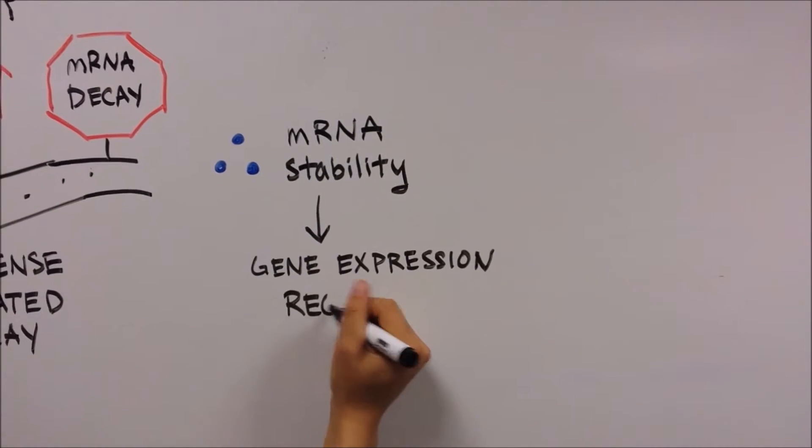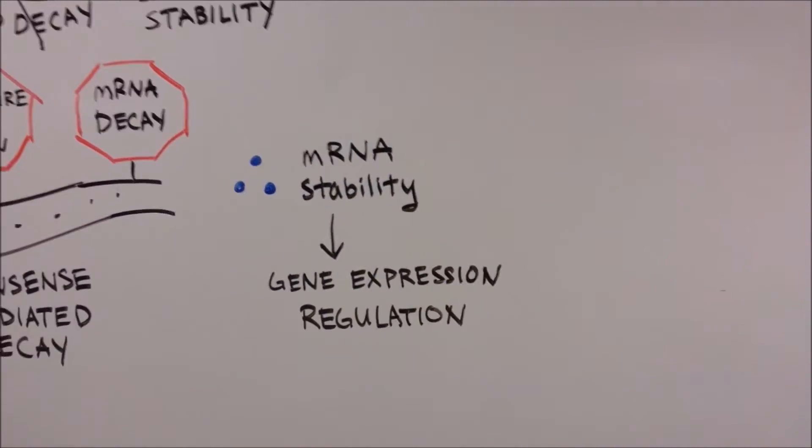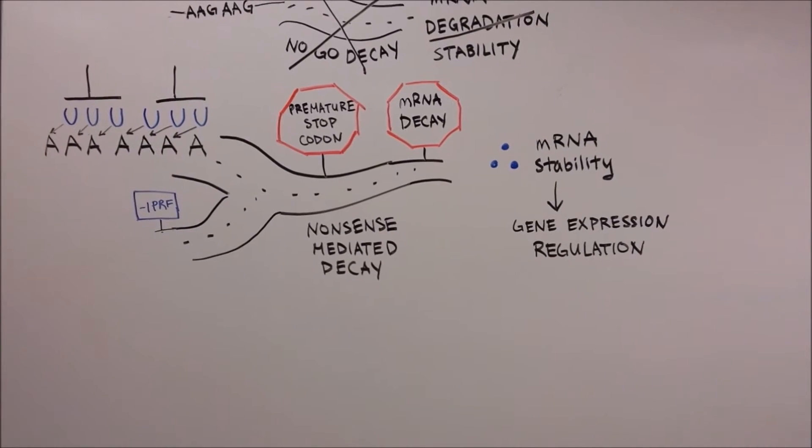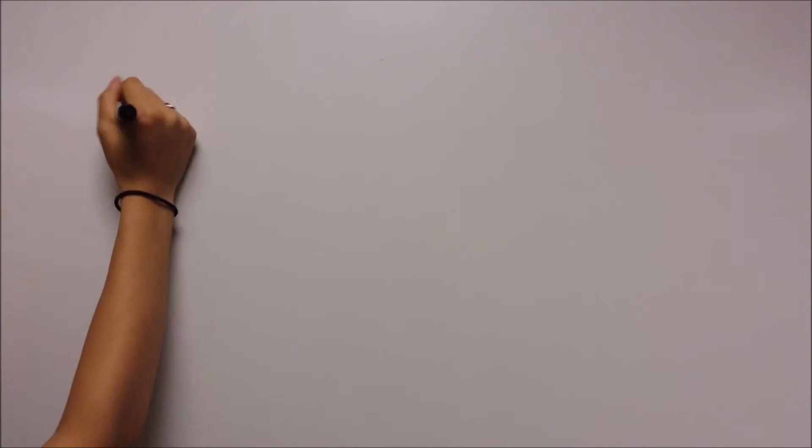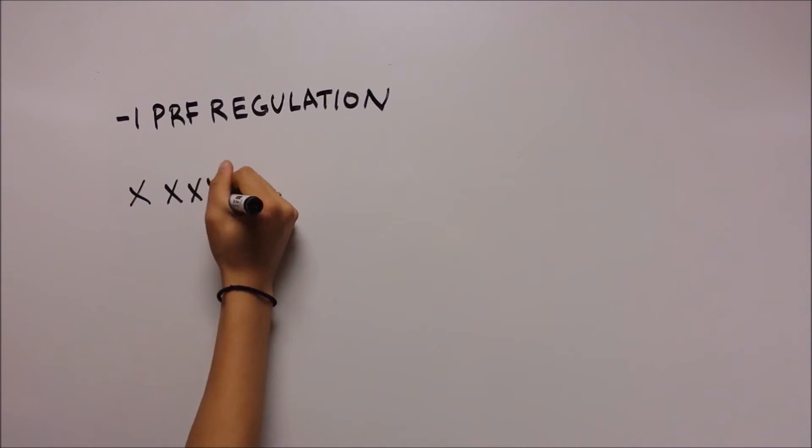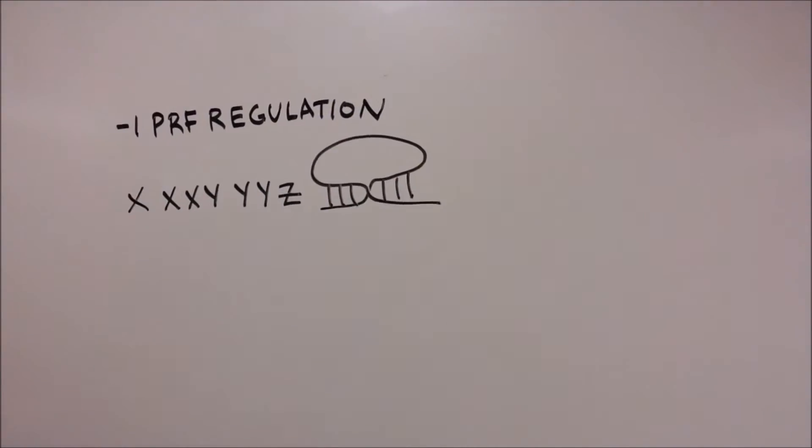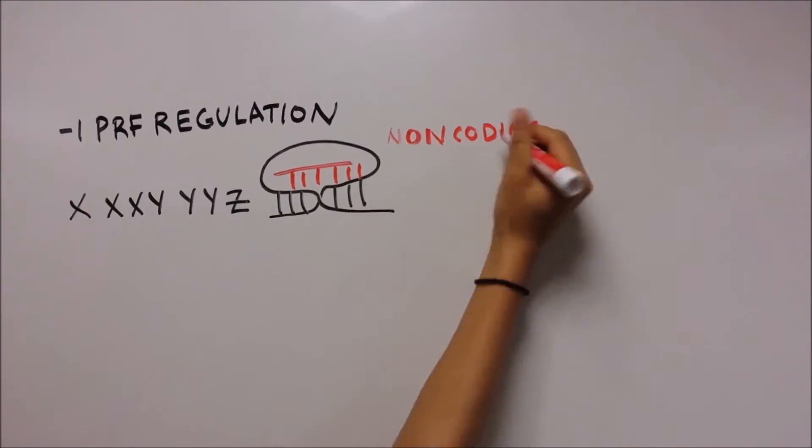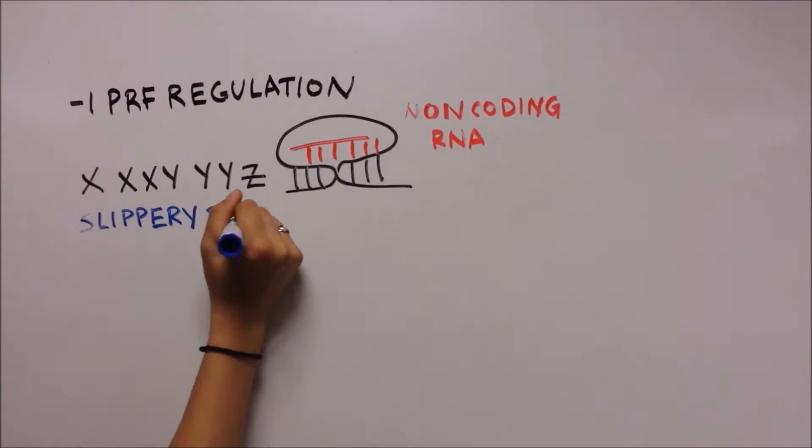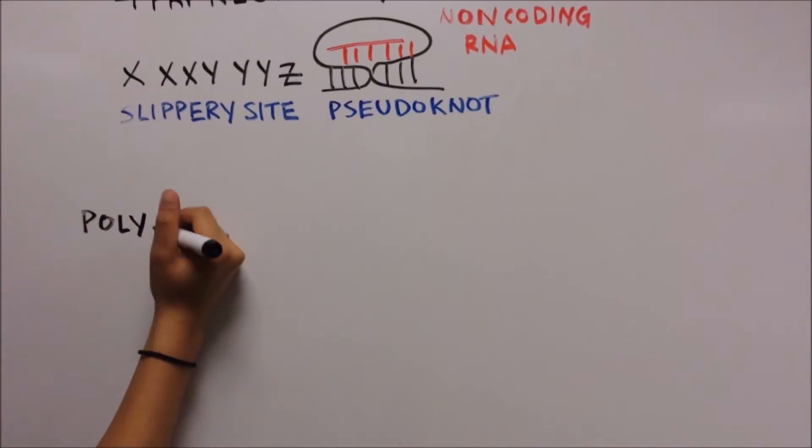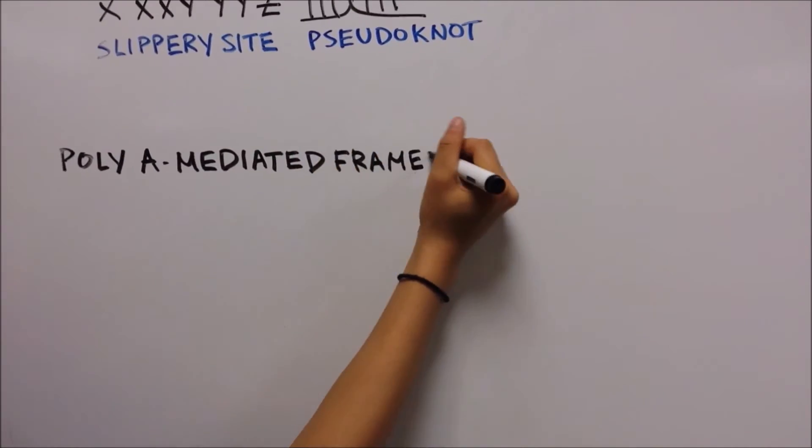If minus-1 PRF regulates gene expression, how is minus-1 PRF itself regulated? We know that canonical minus-1 frameshifting can be regulated through interactions between the frameshift-stimulating mRNA structures and non-coding mRNAs, but it is not known how poly-A-mediated frameshifting is regulated.